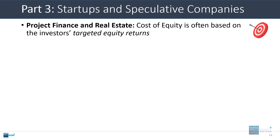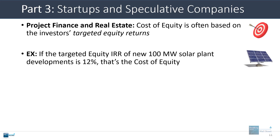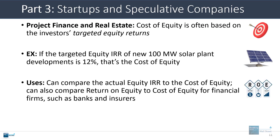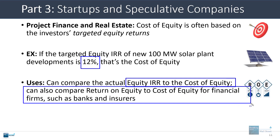In project finance and real estate, the cost of equity is often based on the investor's targeted equity returns. For example, if one investor targets an equity IRR of 12% on a 100-megawatt solar plant development, that will be your cost of equity. When you run an analysis, you compare the actual equity IRR to this 12% cost of equity to see if the actual number exceeds the targeted number. You can also compare the return on equity to the cost of equity when modeling a financial firm like a bank or insurance company.